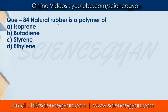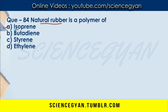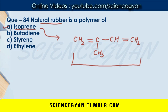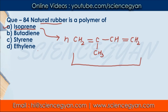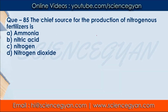Question number 84: Natural rubber is a polymer of — four options are given. The correct answer is A — isoprene. The structure of the isoprene unit is shown here. When n molecules of isoprene combine, it takes a polymeric form, and that is natural rubber.